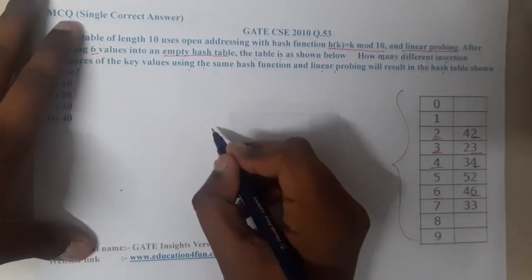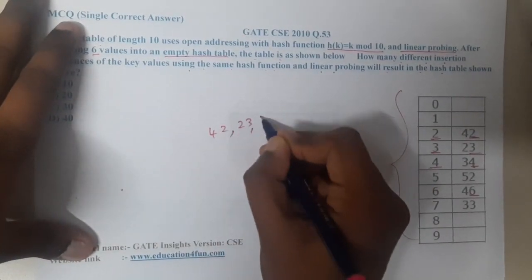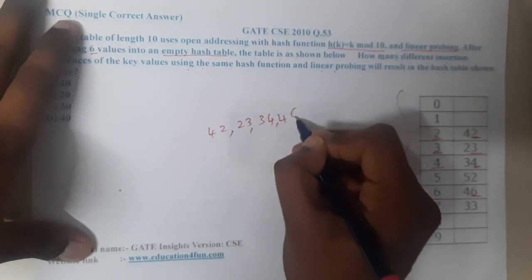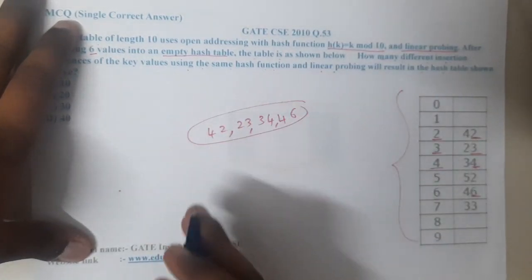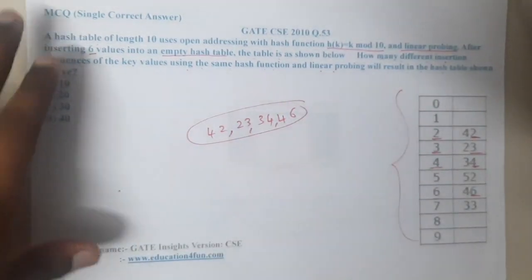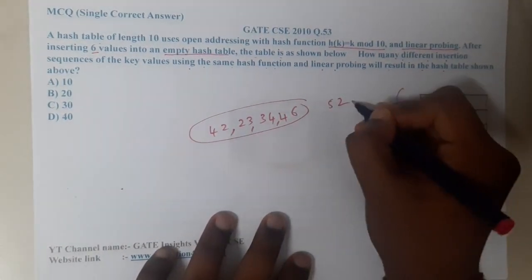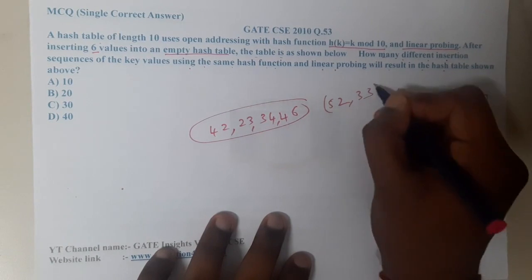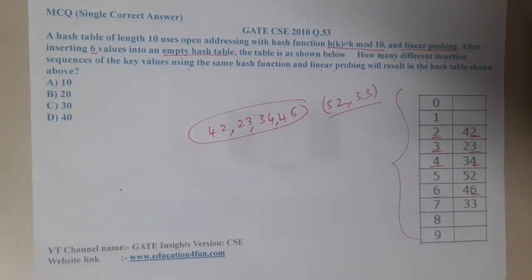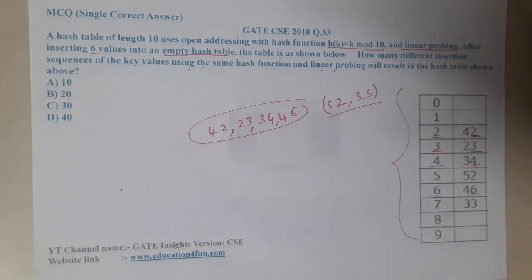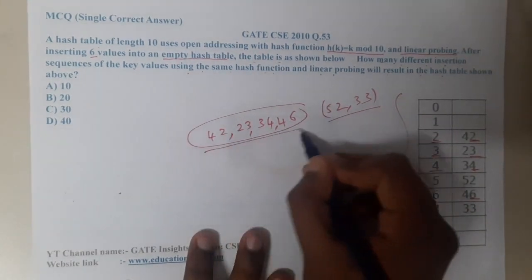So basically 42, 23, 34, and 46 came in some order initially. After that, 52 came, and after 52, 33 came — so this is the exact order in which they came. Now let us start analyzing. These four elements can be in any random order.